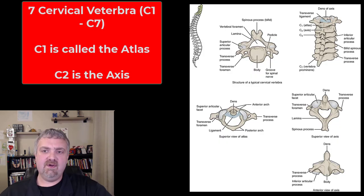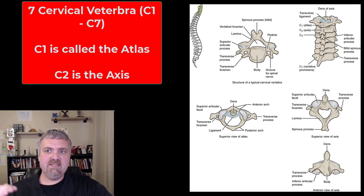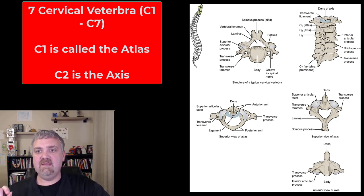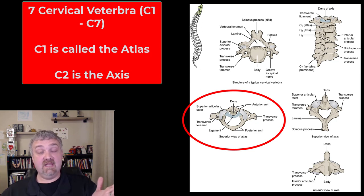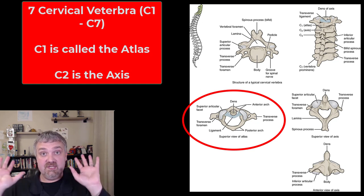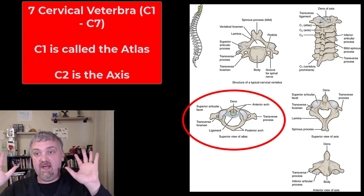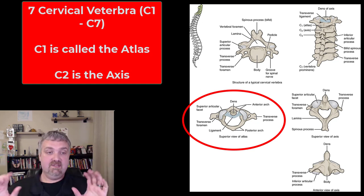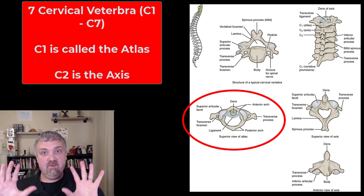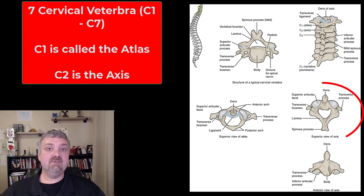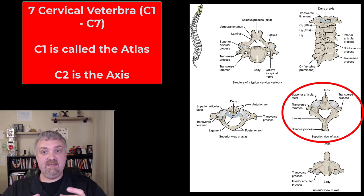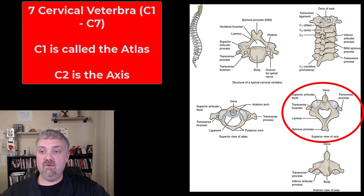Here you see your cervical vertebrae. There are seven of them, named C1 to C7, but C1 and C2 have their own special names. C1 is called the Atlas — just like in Greek mythology, Atlas holding the heavens, C1 is holding your skull. C2 is called the Axis because it's the axis point for rotation of your cervical spine.